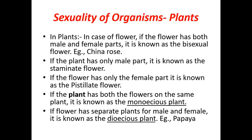If a tree bears both male and female flowers on the same plant, it is known as a monoecious plant. If the male plant and female plant are separate, it is known as a dioecious plant — for example, papaya, where male and female flowers are on different plants.